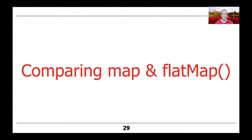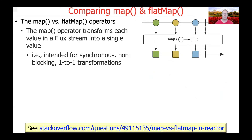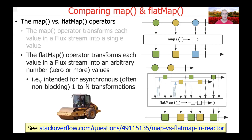Let's step back and compare the map and flatMap operators. The map operator transforms each value in a Flux stream into a single value — a one-to-one mapping — intended for synchronous, non-blocking, one-to-one transformations. In contrast, flatMap transforms each value into an arbitrary number of values (zero or more), and is intended for asynchronous, often non-blocking, one-to-N transformations. In some sense it's more powerful, but also more complicated and potentially slightly less efficient. However, when used with the concurrency idiom, you get a big return on investment because all the inner publishers can run in different threads in a thread pool.